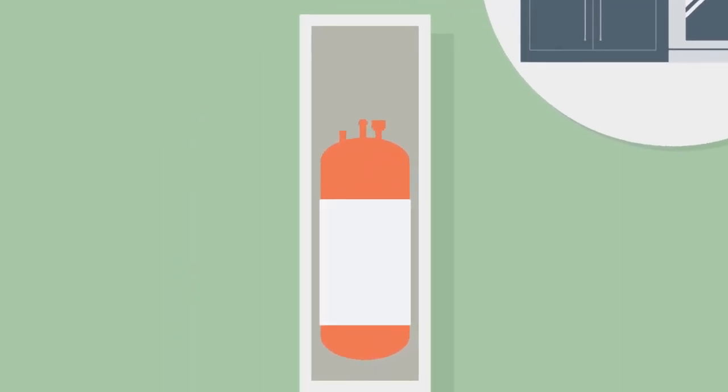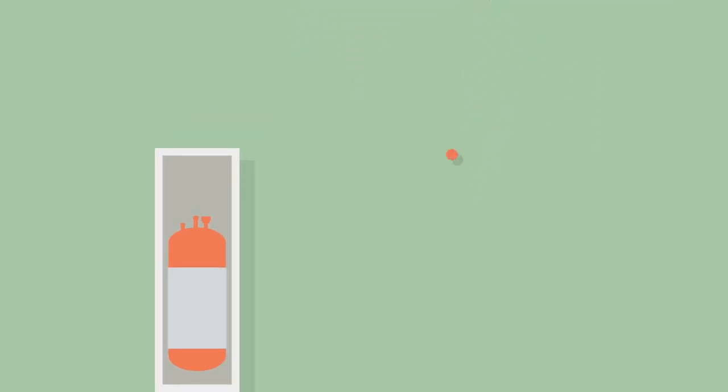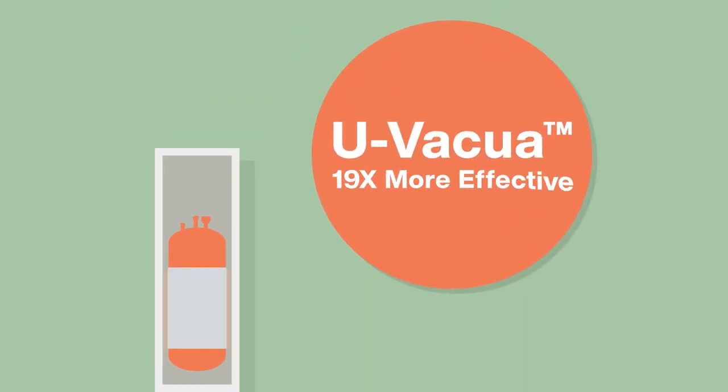Aquaria's water tank is surrounded by U-Vacua, Panasonic's unique high-performance thermal insulation material. Though it is such a thin panel, U-Vacua is 19 times more effective in insulation compared to conventional thermal insulation material.